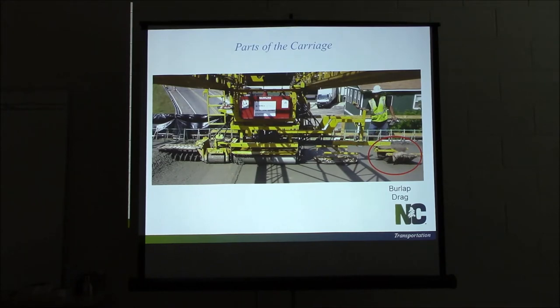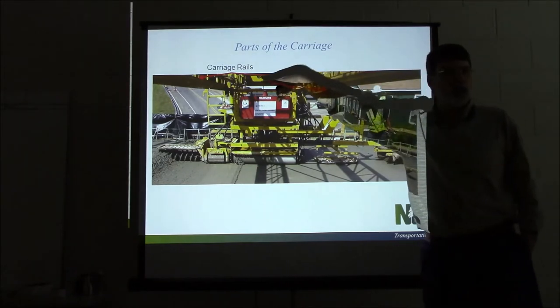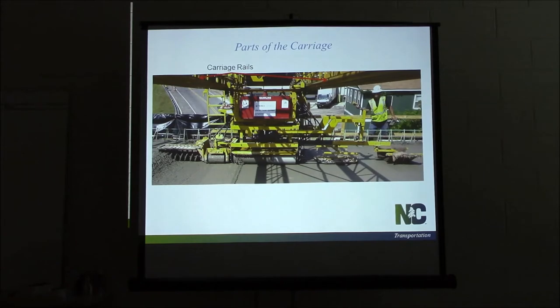Two things I want you to remember right here. This thing right here, I'm going to be calling that the screed rail all day long. That is the rail that runs down parallel to the center line on the edges that your truss is riding on. When I start talking about carriage rail, I'm talking about these two rails up here inside the truss frame that the bogie rides back and forth on. The whole screed rides on the screed rail. Just the carriage or the bogie itself rides on the carriage rail.